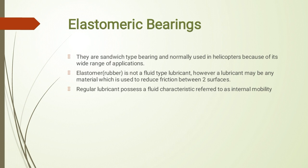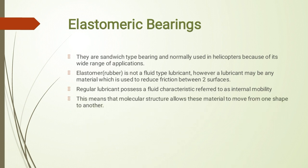Internal mobility क्या है? It is the kind of molecular structure जो allow करते हैं material को एक shape से दूसरी shape लेने में। तो internal mobility का मतलब है कि molecular structure allows the material to move from one shape to another. इस slide में हमने देखा कि elastomer जो rubber है वो fluid type lubricant की तरह behave करती है — यानि friction को reduce करता है दो surfaces के बीच में।